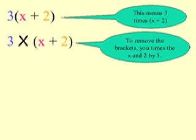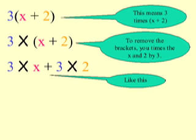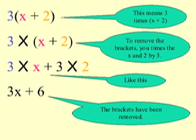We do this by multiplying the 3 by the bracket x plus 2. Which means that we multiply the 3 by the x, and then we add the 3 by the 2. 3 times x is 3x, plus the 3 times 2, which is 6.